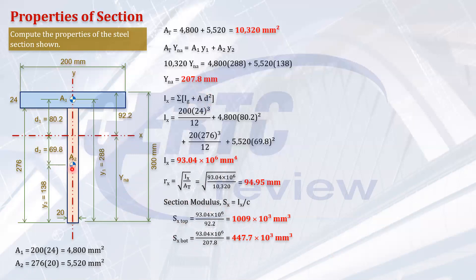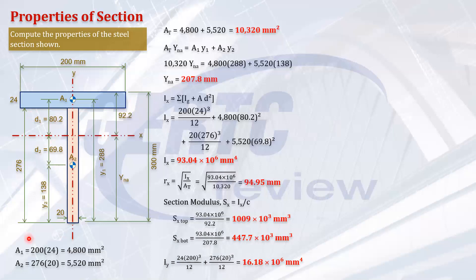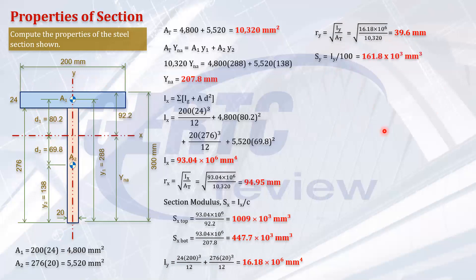For the moment of inertia about the y-axis, no transfer is needed because both centroids lie along the y-axis itself, so the transfer distance is zero. Iy consists of the flange contribution (24 × 200³)/12 plus the web contribution (276 × 20³)/12, giving 16.8 × 10⁶ mm⁴. The radius of gyration ry equals the square root of Iy over total area, which is 39.6 mm. Since the section is symmetrical about y, there is only one section modulus: Sy equals Iy divided by 100, giving 161.8 × 10³ mm³.